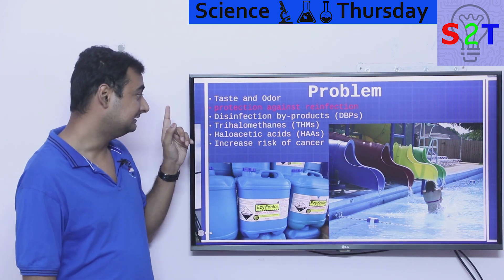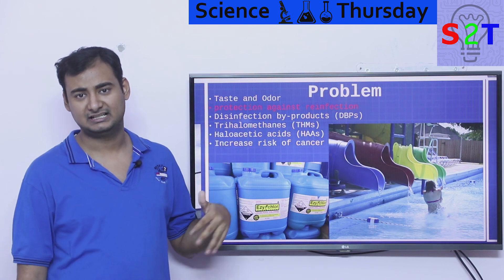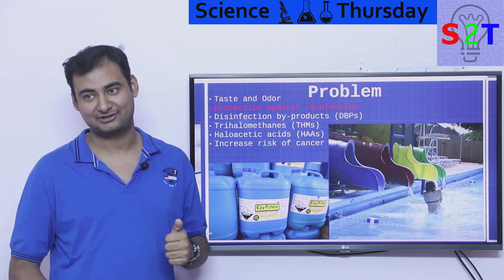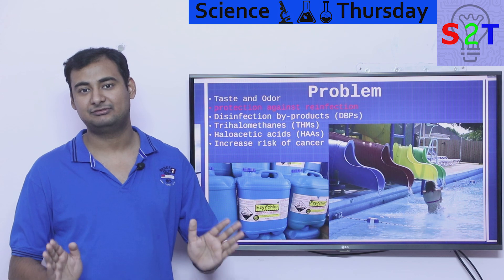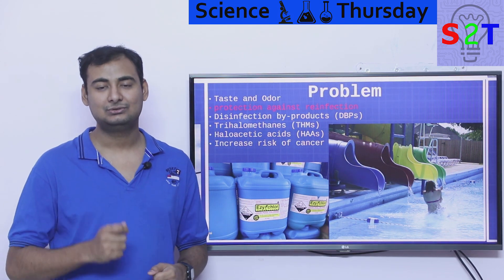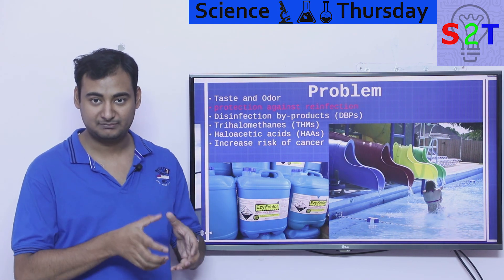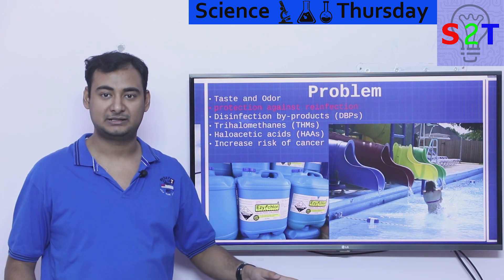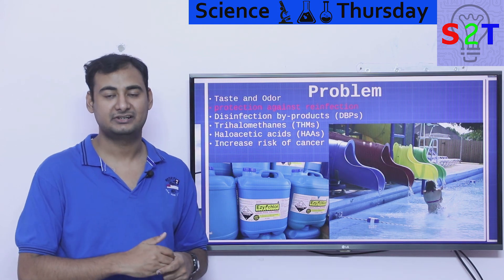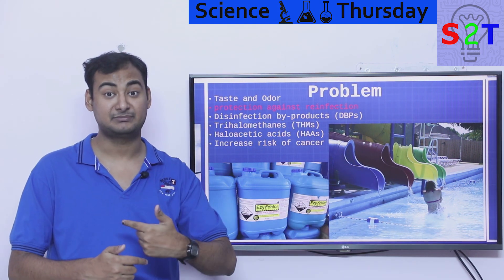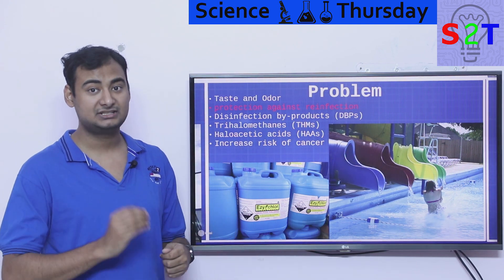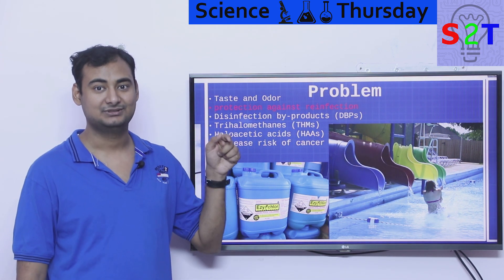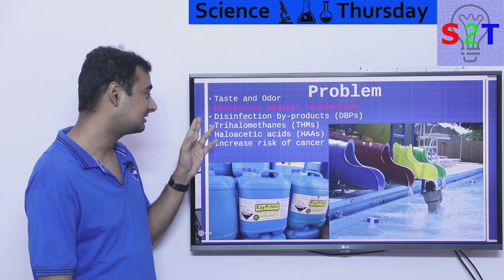Another issue, which I've highlighted as a problem, is that chlorine protects against reinfection. To do this, chlorine is re-added after the filtration process — after the water is already clean and safe — so it can protect against contamination during the plumbing system. If you have a city water treatment plant with 500–600 kilometers of pipeline, you must ensure it doesn't get recontaminated. Adding chlorine ensures bacteria and viruses cannot enter. The problem is that this active chlorine in the distribution system produces disinfection byproducts, or DBPs.